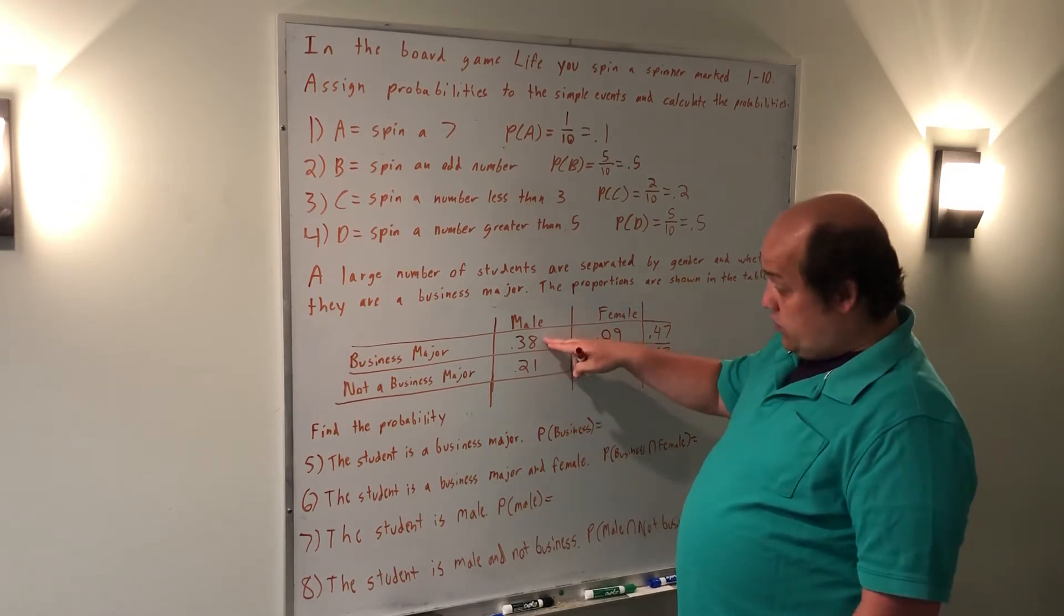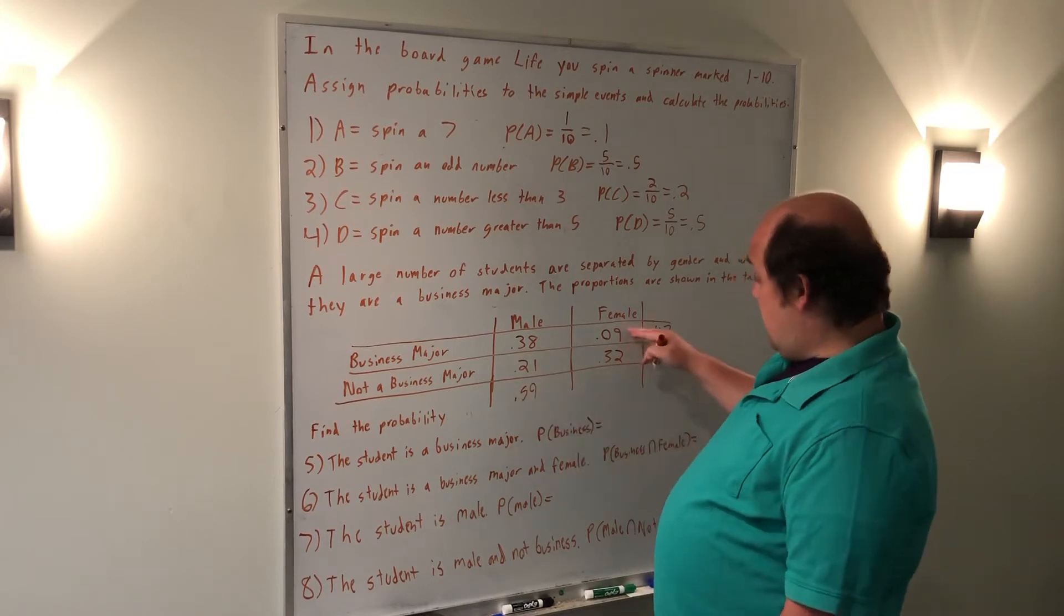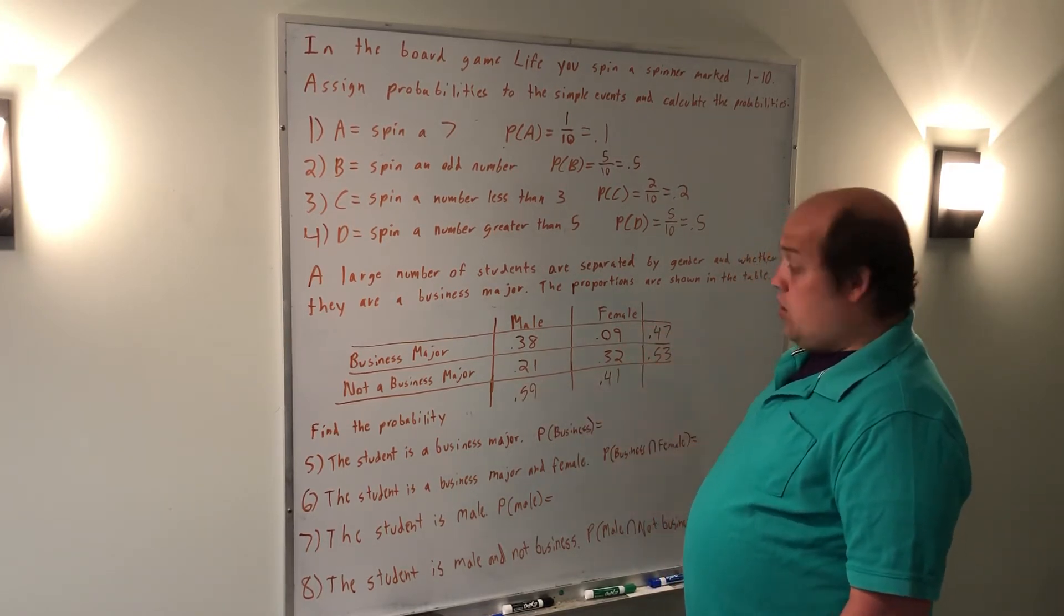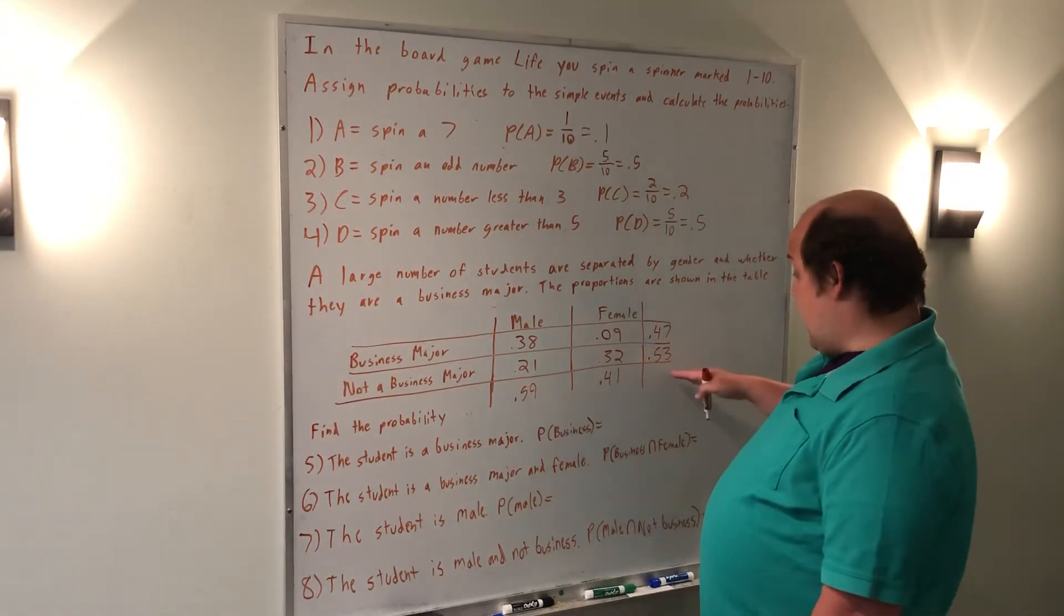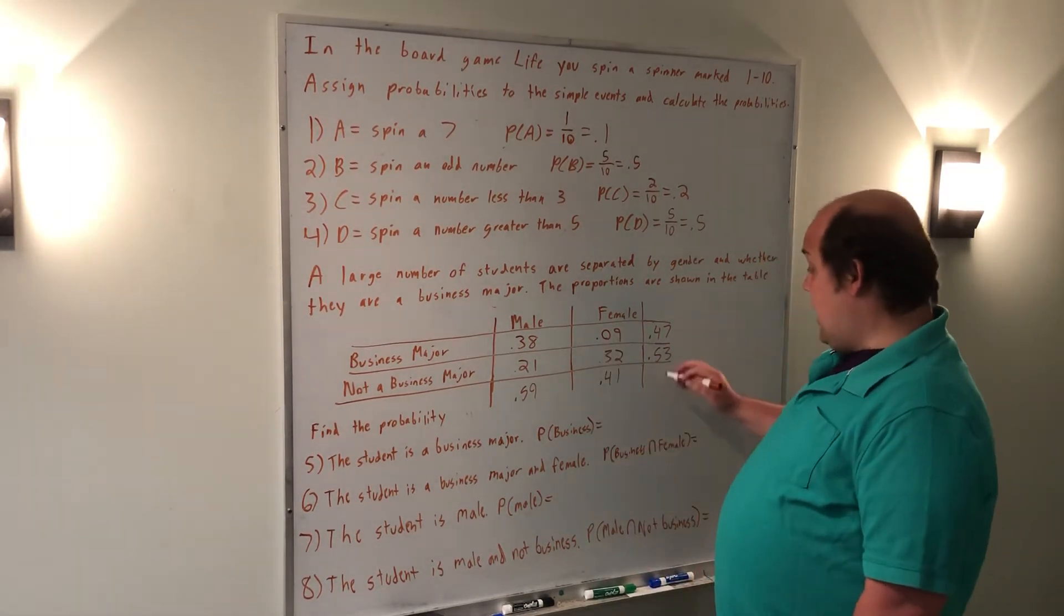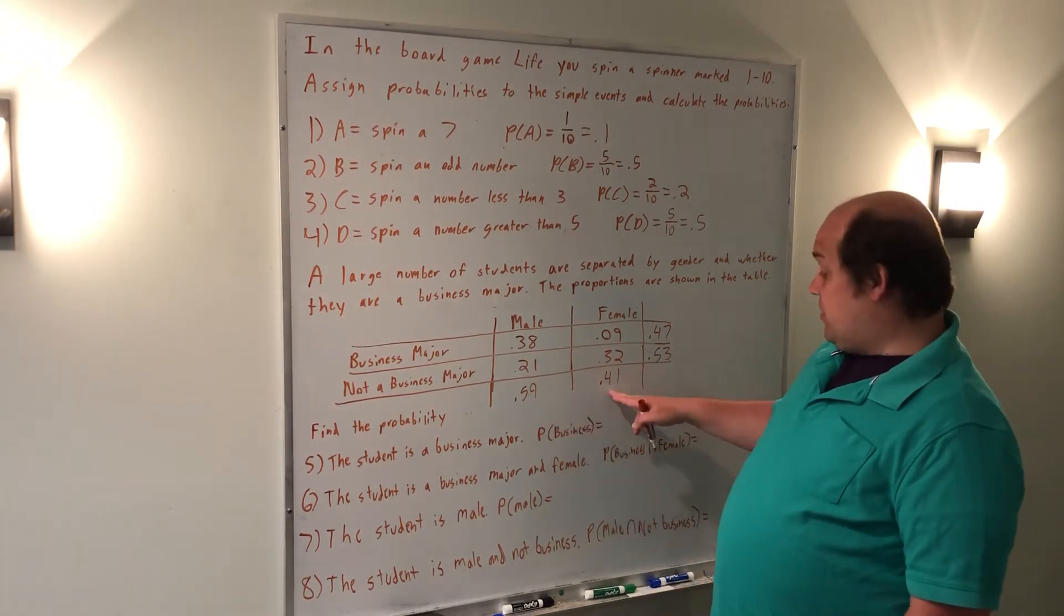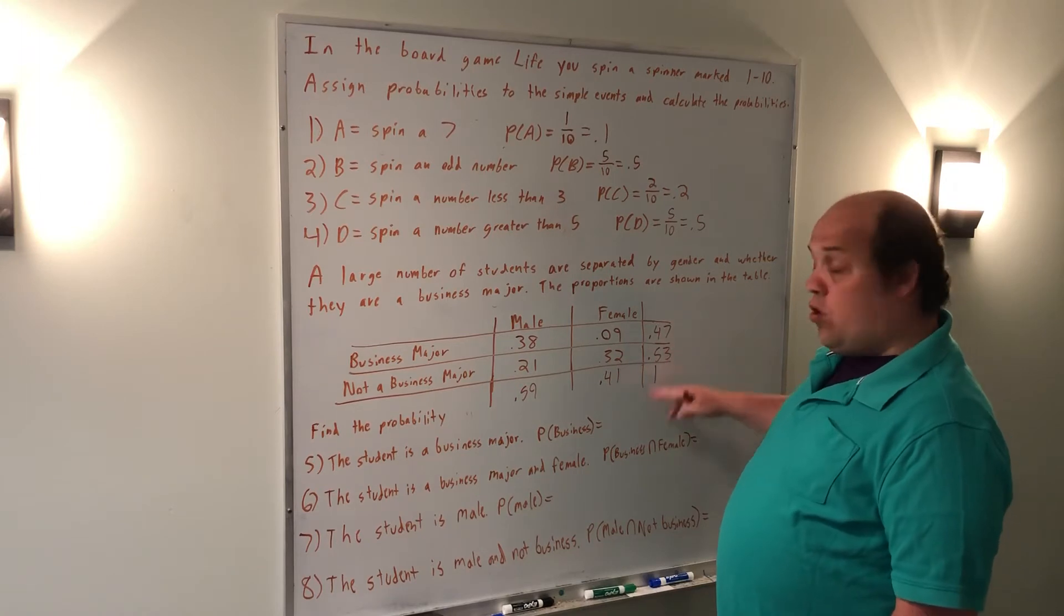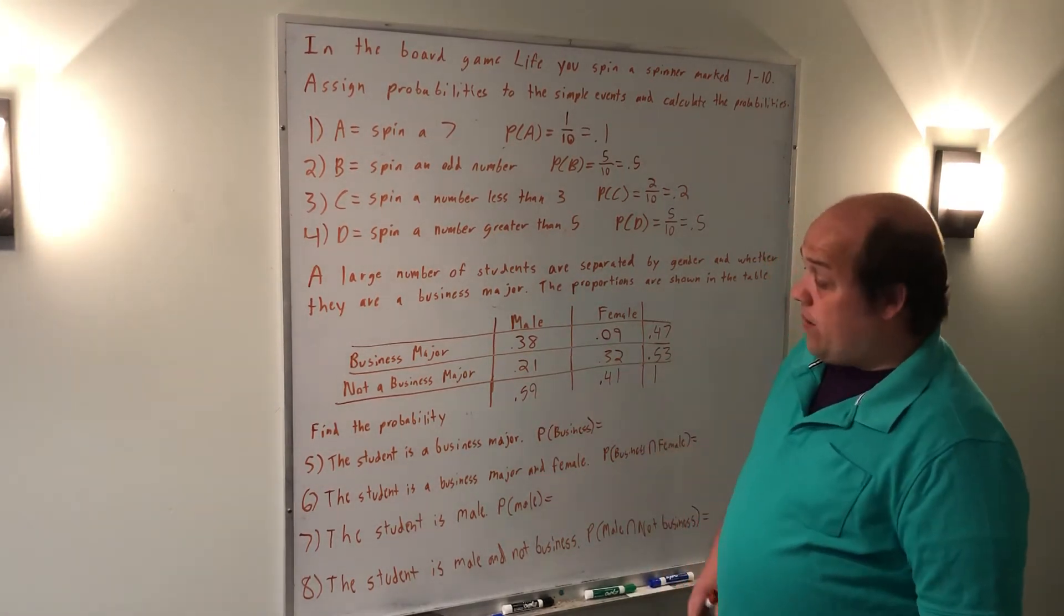The column totals: 0.38 plus 0.21 gives me 0.59, and 0.09 plus 0.32 gives me 0.41. When you've got the column and row totals, it should be the case that when you add across or add down, you get the same thing. Specifically when it's this proportion version, I should get 1 when I add across or down. 0.59 plus 0.41 does give me 1, and 0.47 plus 0.53 also gives me 1. That means we have 100% of the table represented.